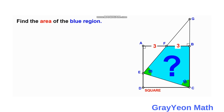Let us label the side of the square as S, so this side is S and this side is S. And we label segment AE as X.